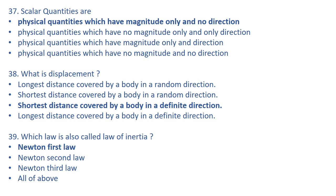What is displacement? Displacement is the shortest distance covered by a body in a definite direction. The right answer is C — shortest distance covered by a body in a definite direction.